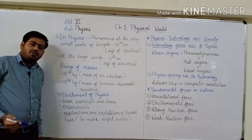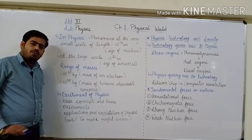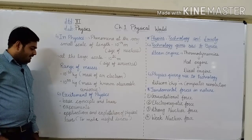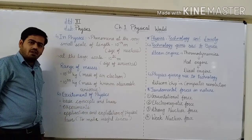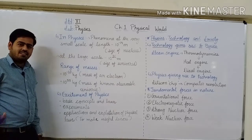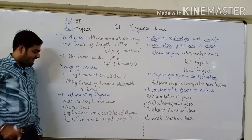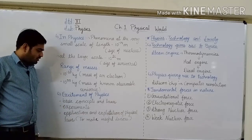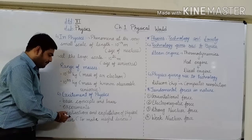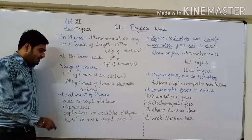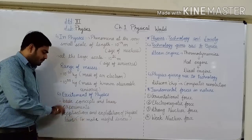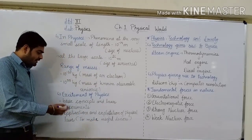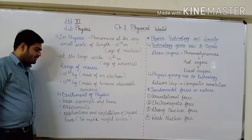Last time I started the topic scope and excitement of physics. We have completed the scope of physics. Now, excitement of physics: for some people basic concepts and laws of physics are the excitement. For some people, studying or inventing is the excitement. For some people, performing experiments using these laws is the excitement. And next, that is application and exploitation of physics — by using physical laws and performing experiments, we can make different useful devices. For some people, making useful devices using these concepts and laws is the excitement of physics.